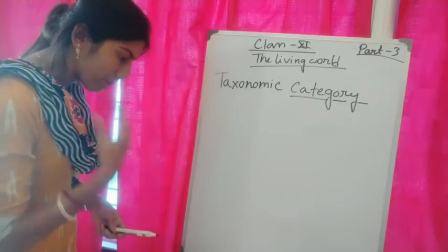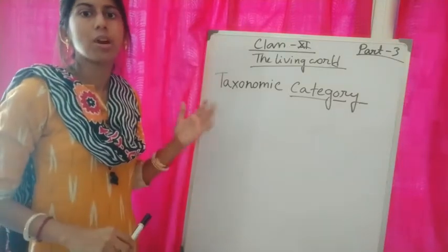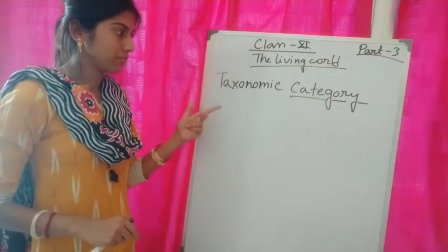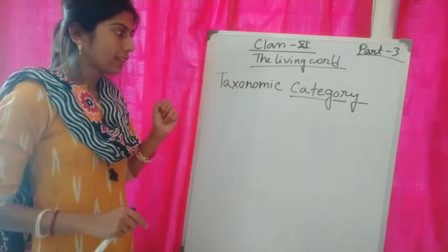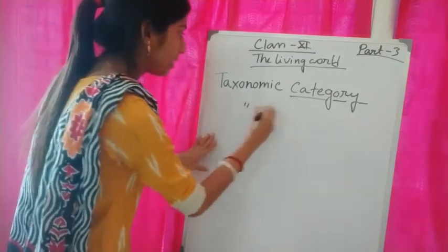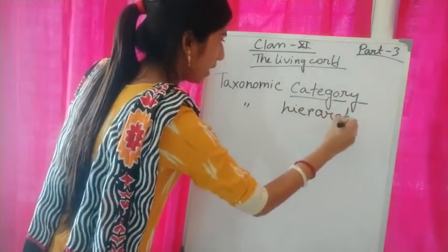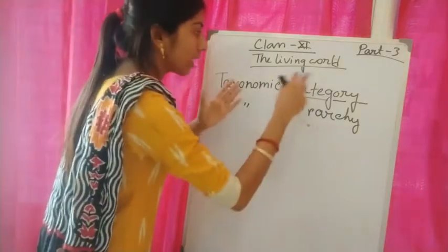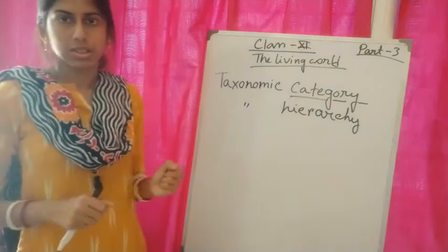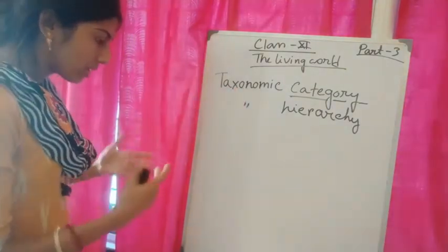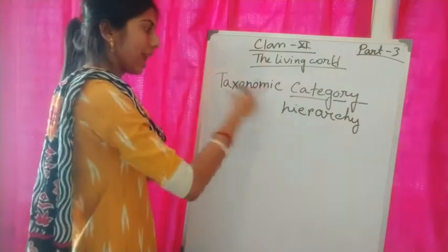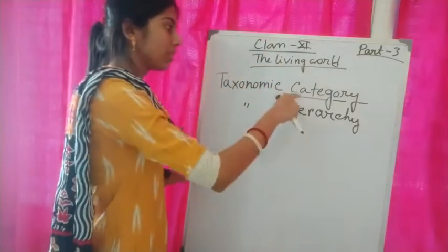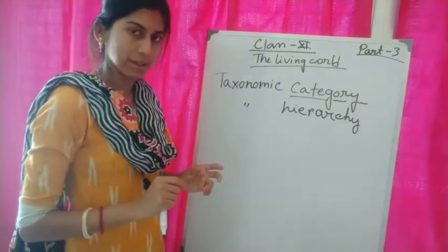A category is one part of the overall taxonomic arrangement. Another related term is taxonomic hierarchy. All categories together are called the taxonomic hierarchy. There are many hierarchical steps in taxonomy and each step is a category, so all the categories together constitute the taxonomic hierarchy.